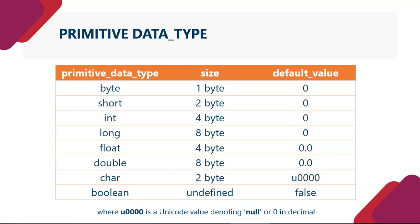Jo primitive data type hai byte, uska jo size hota hai, woh one byte hota hai. Short ka two byte, integer ka four byte, long ka eight byte, float ka four byte, double ka eight byte, char ka two byte, boolean ka undefined. Kafi log yahan par jo size batate hain, woh batate hain one byte. Lekin Java mein, yoh undefined hai.